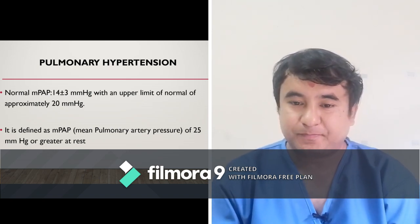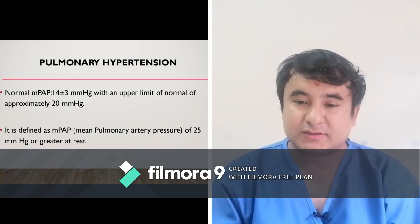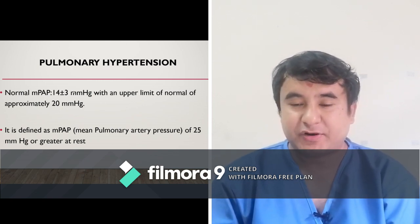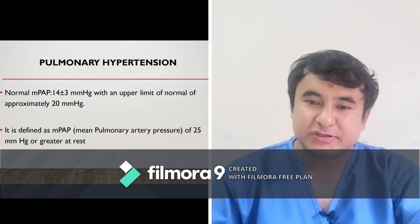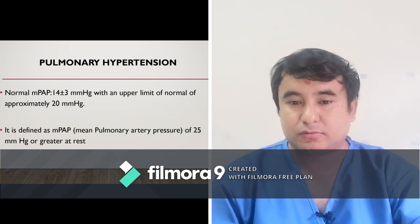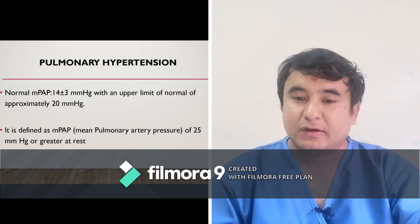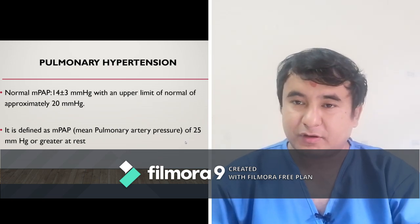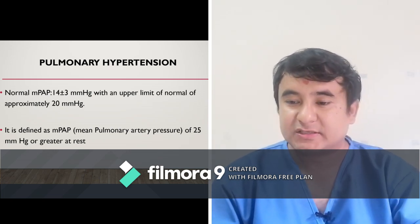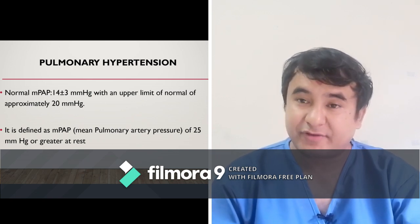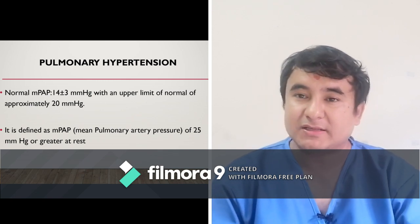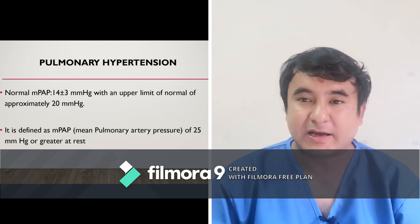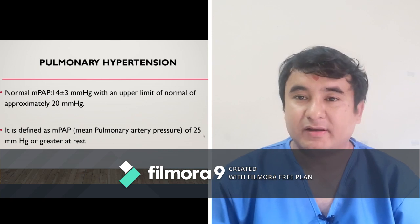What is pulmonary hypertension? As you know, the pulmonary artery arises from the right ventricle of the heart and it has certain pressure. If you measure the pressure over the pulmonary artery in a normal individual, it will be around 14 plus or minus 3 mmHg. Some researchers have kept 20 mmHg as the upper limit of mean pulmonary artery pressure. But if the mean pulmonary artery pressure is more than or equal to 25 mmHg at rest, then it is called pulmonary hypertension.